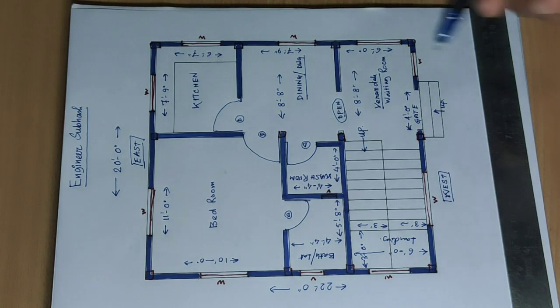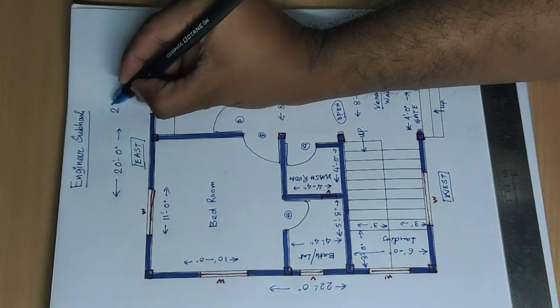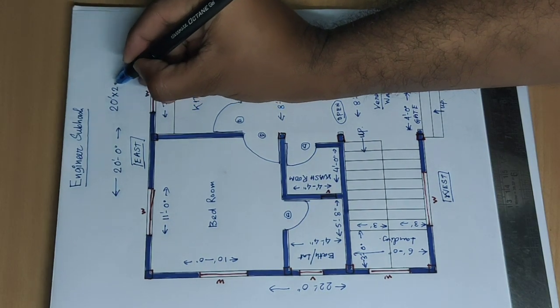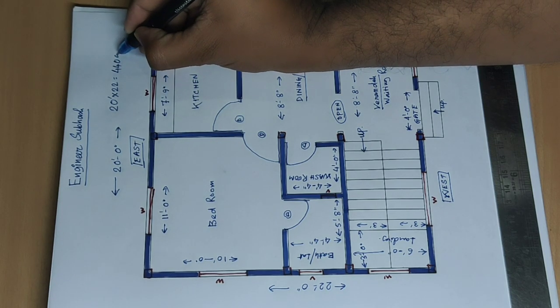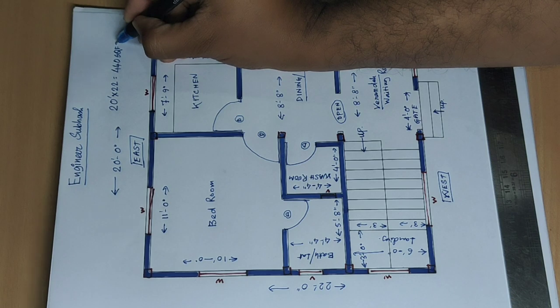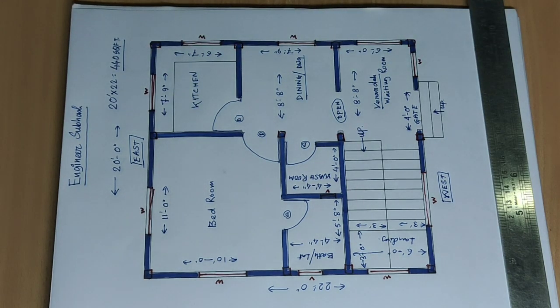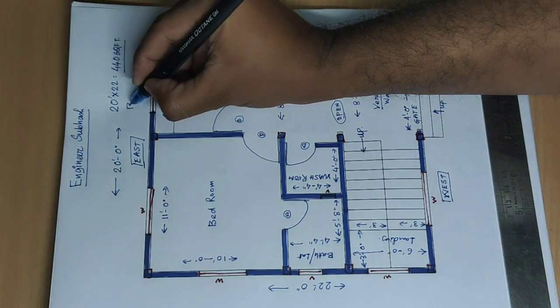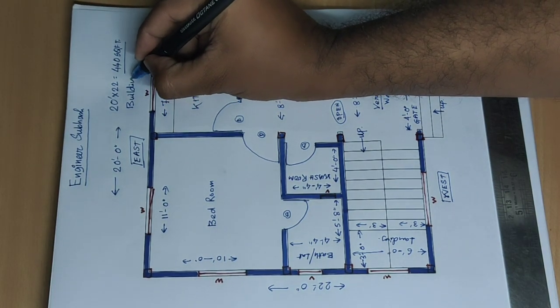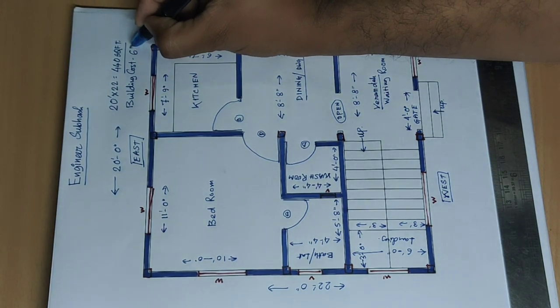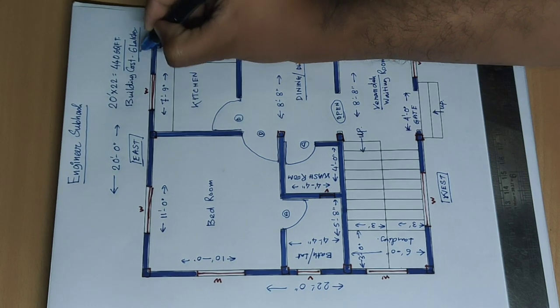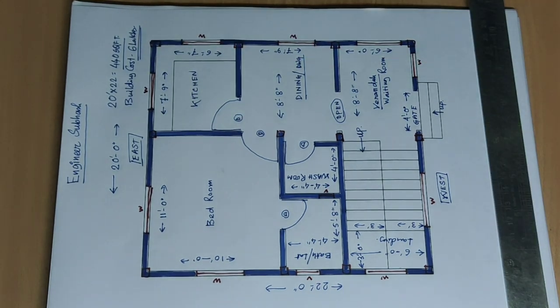Total building cost: 20 into 22, 440 square feet. Total building cost, 6 lakhs construction cost.